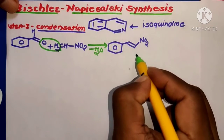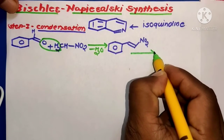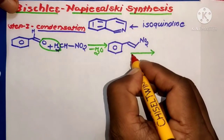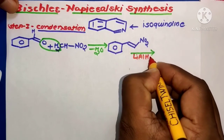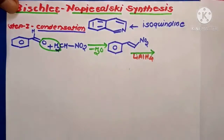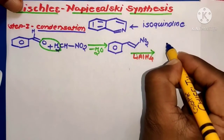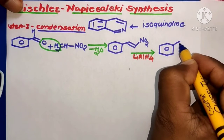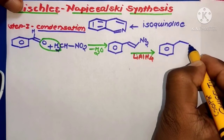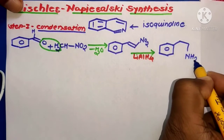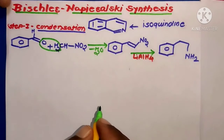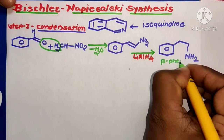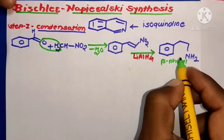This molecule is then reduced in the presence of a reducing catalyst like LiAlH4 to form the molecule benzene-CH2-CH2-NH2, that is beta-phenylethylamine.